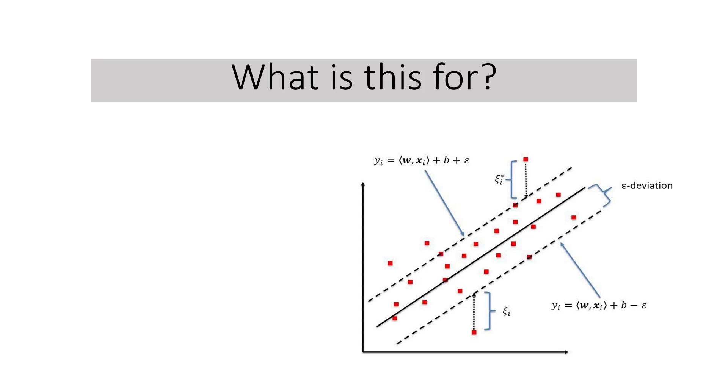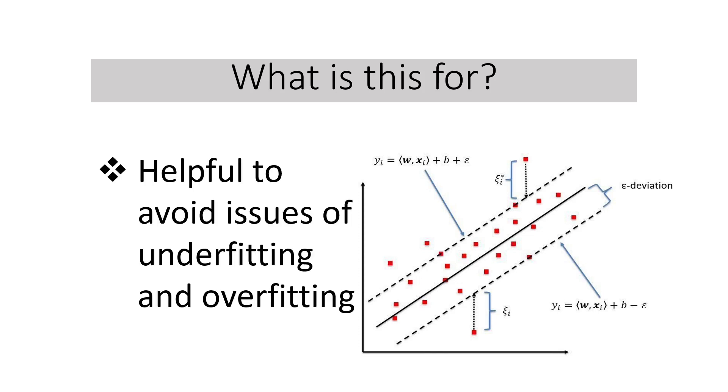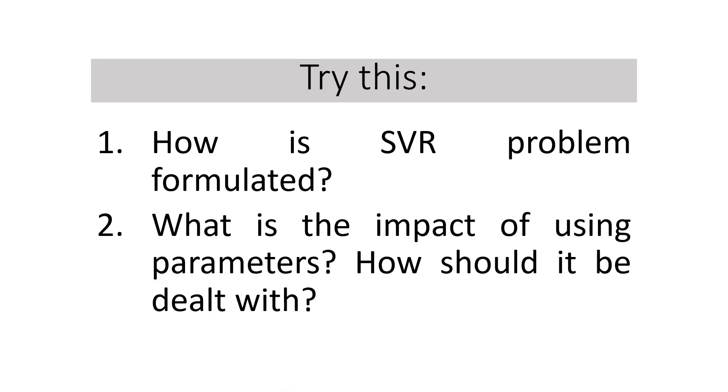What is this for? Why do we have to study this? Basically, we always deal with data science problems with a lot of features to consider. Knowing this support vector regression problem formulation, we'll be able to understand how to deal with the problem to avoid overfitting and underfitting. After all being said and done, let's try this: How is support vector regression problem formulated? What is the impact of using parameters? How should it be dealt with? Please write your answers in the comments so we can learn from each other.